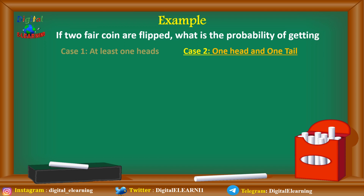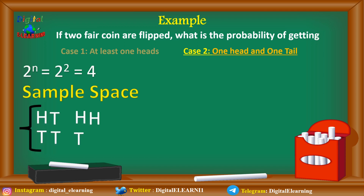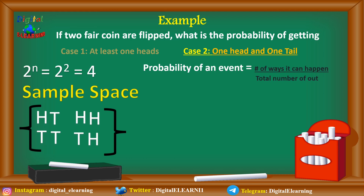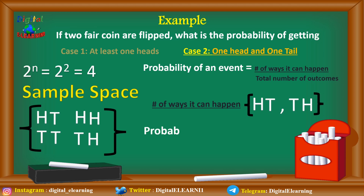For the second case — one head and one tail — the sample space is still 4. Applying the same formula, we need exactly one head and one tail. This occurs in two cases only: HT and TH. So the number of ways it can happen is 2, giving a probability of 2 divided by 4, which comes to 50 percent.